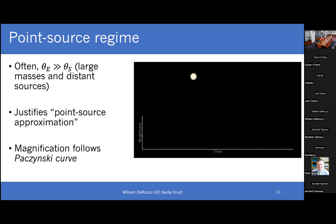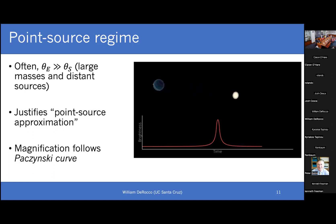I'll show this with a little video. On the top you see the bright source in the background; a dark object moves in front and causes lensing — you get multiple images and a nice Einstein ring in the middle, then it moves off. On the bottom is what's called the Pachinsky curve, the analytic derivation for a point source, derived by Bohdan Paczyński. I would strongly encourage you to look him up — he's a really interesting figure in the history of science.